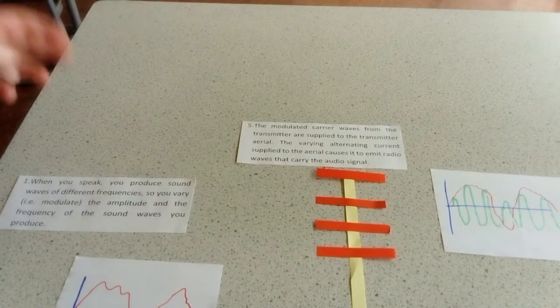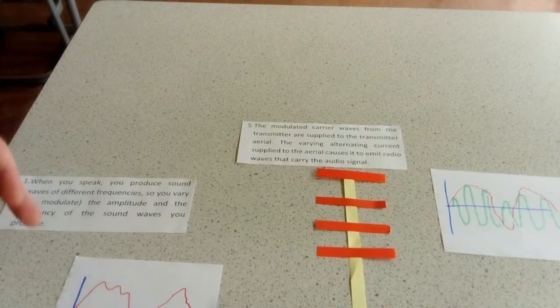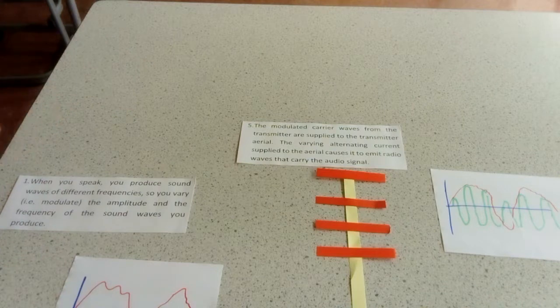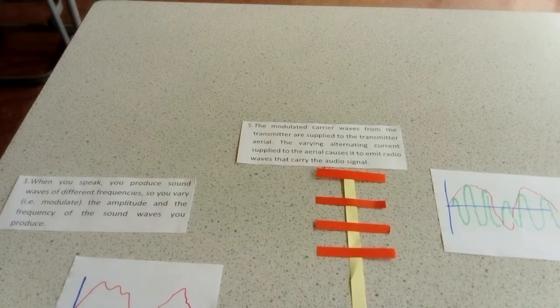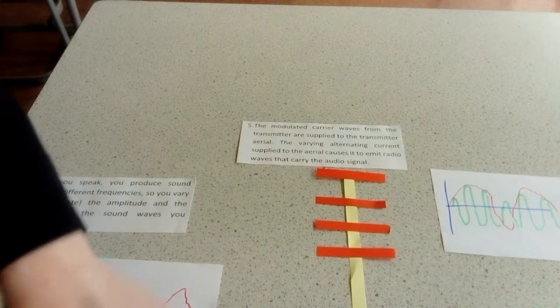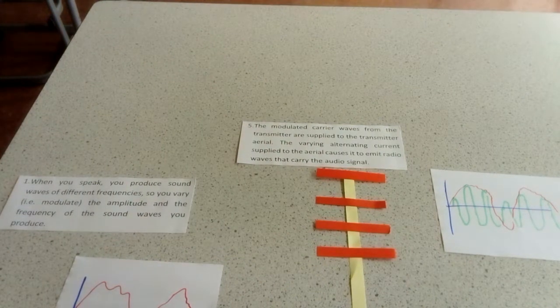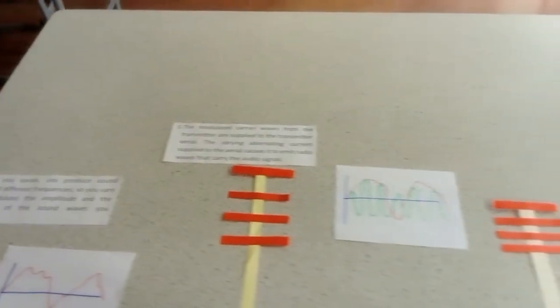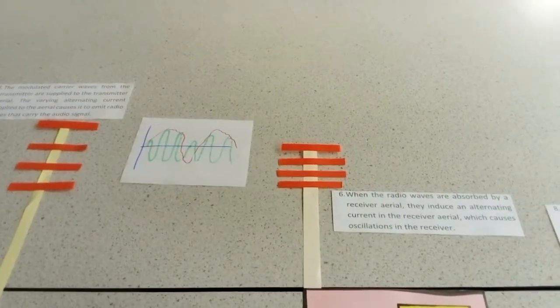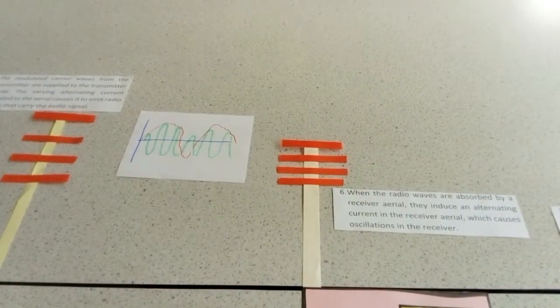The modulated carrier wave from the transmitter is applied to the aerial. The variant alternating current supplied to the aerial causes it to emit a radio wave that has the same signal as that modulated carrier wave. That signal is then transmitted where eventually it will be picked up by a receiver.